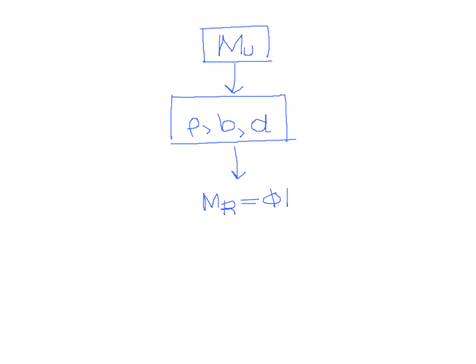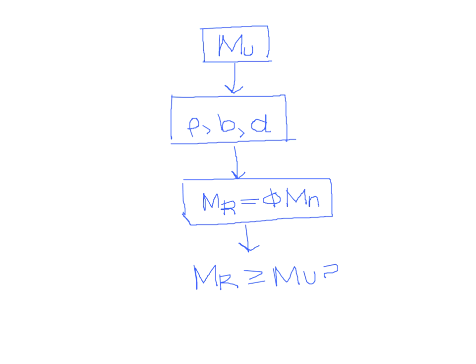Once you've checked your parameters and they satisfy code, you can continue and determine M sub R, which equals phi times M sub N. Just like a beam, we assume phi equals 0.9 for bending in one direction. Finally, make sure your resisting moment is greater than or equal to your applied moment. If that's the case, the analysis is complete. If not, it's inadequate and a redesign would be needed.